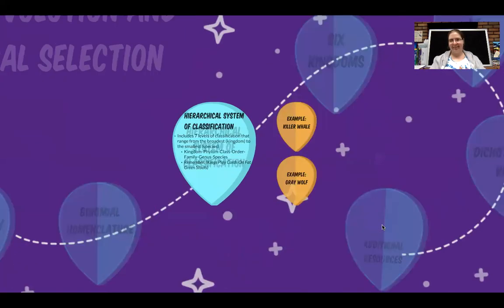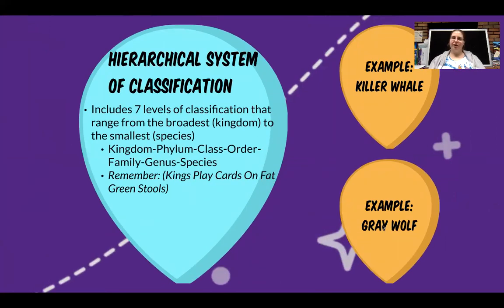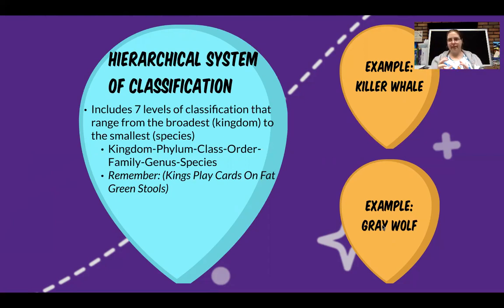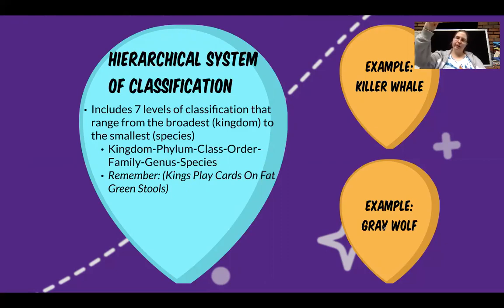Now let's talk about the hierarchical system of classification. It looks at how we group organisms, always starting with the biggest, broadest group and then slowly narrowing down to the most specific. We're going to focus on the seven main levels. The broadest is the kingdom, and the most specific — the smallest grouping — is the species. How it goes is: kingdom, phylum, class, order, family, genus, species.